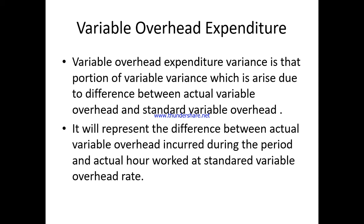Variable overhead expenditure variance is that portion of variable variance which arises due to the difference between actual variable overhead and standard variable overhead. It represents the difference between actual variable overhead incurred during the period and actual hours worked at standard variable overhead rate.